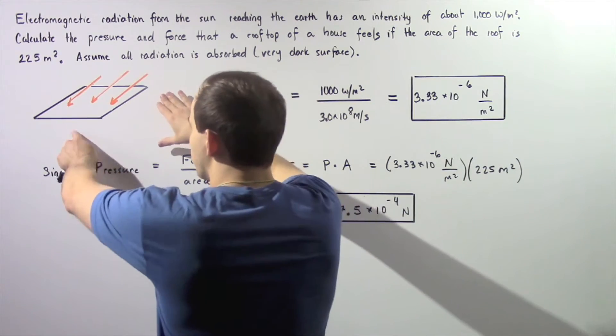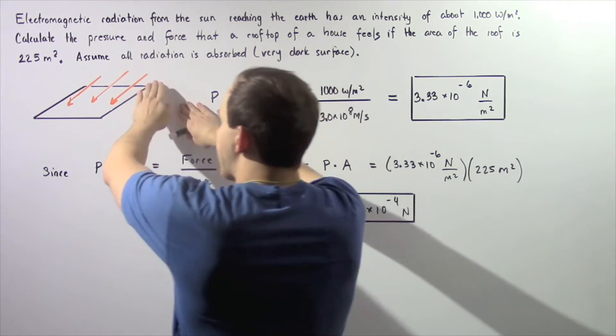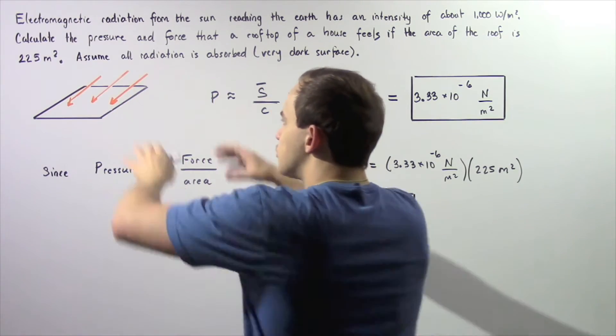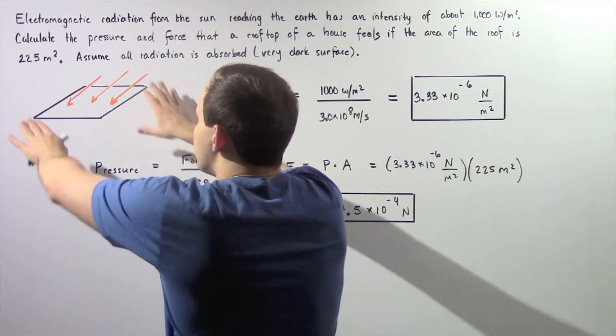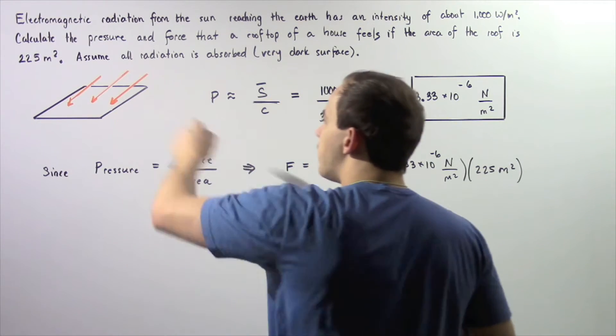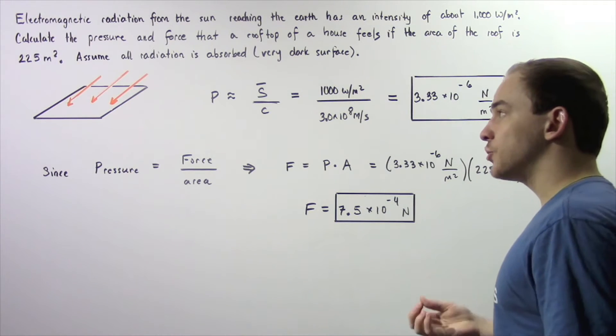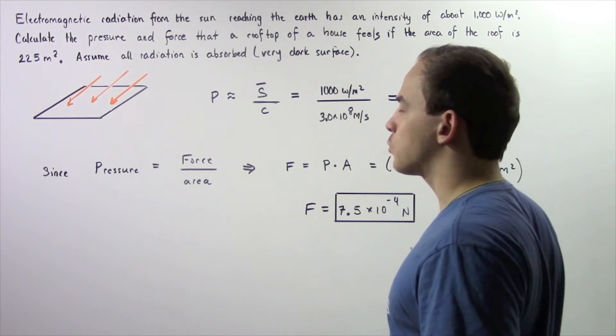Let's examine the following diagram. We have a rooftop with electromagnetic radiation coming from the top, and all that radiation is being absorbed by the rooftop. That radiation is in turn creating a force and a pressure.